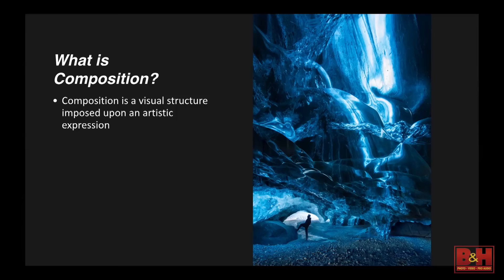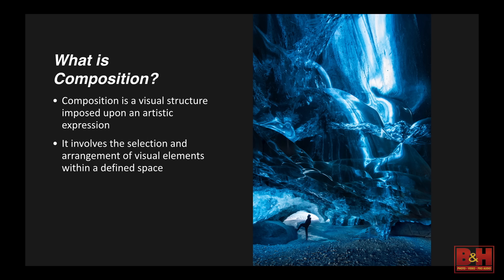Let's start out by asking: what is composition? At its most basic level, composition is a visual structure imposed upon an artistic expression. It involves the selection and arrangement of visual elements within a defined space. Now, this may be the technical definition, but this really isn't a very satisfying definition.